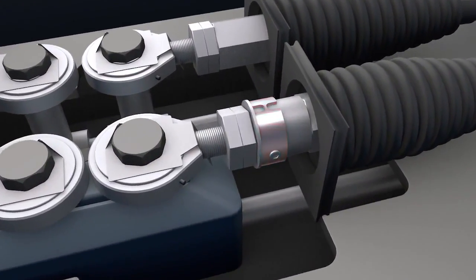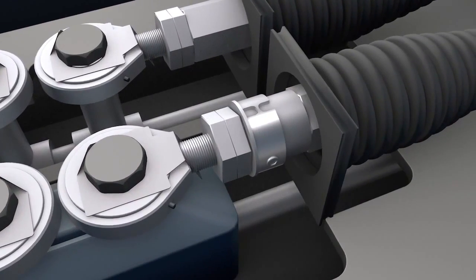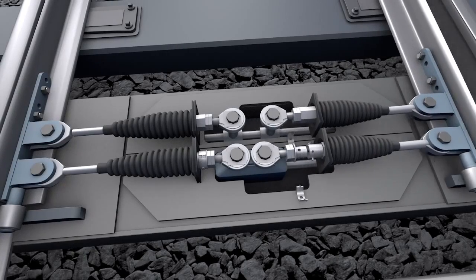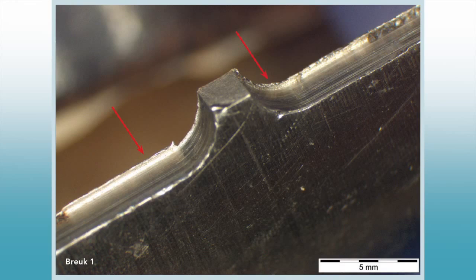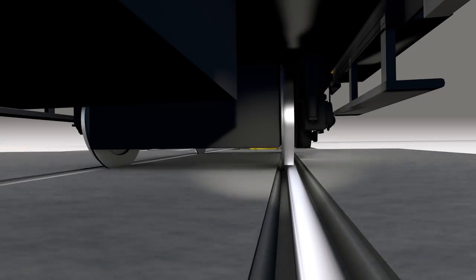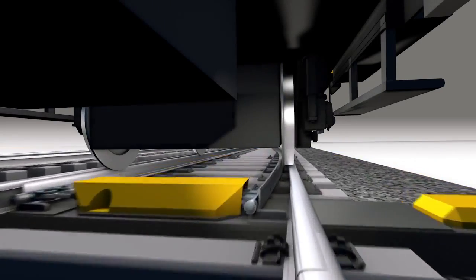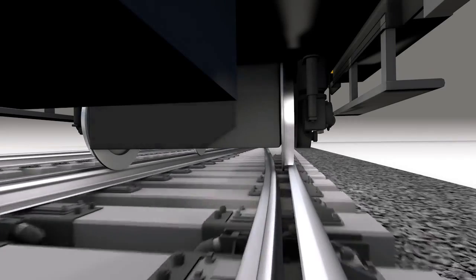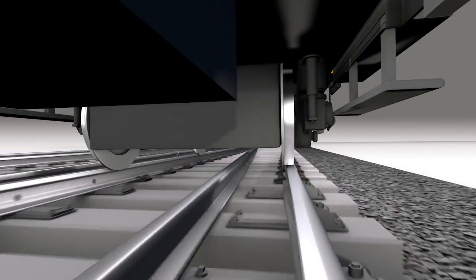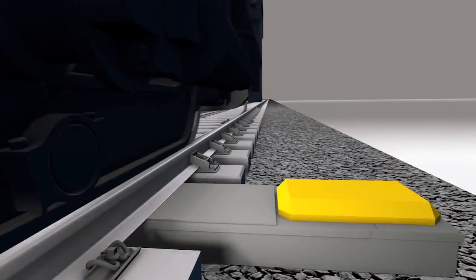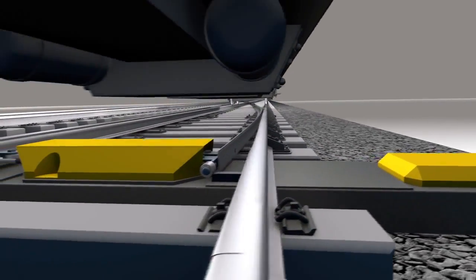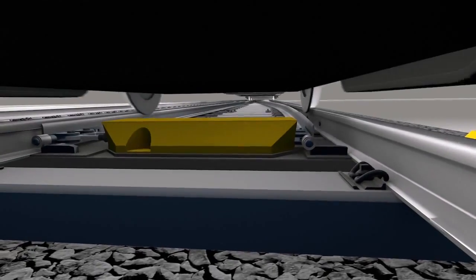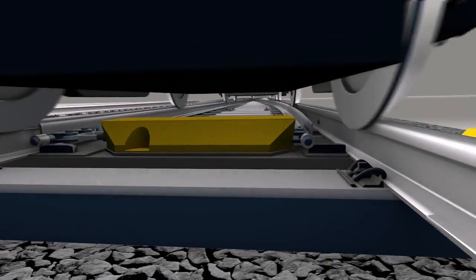Technical investigations revealed that the train derailed because this ring broke suddenly due to fatigue. First of all, the ring revealed finishing defects, making the ring more susceptible to fatigue. Furthermore, the fatigue fracture arose because, over a long period of time, the ring was exposed to additional forces coming from passing trains hitting the switchblades with their wheels. This hitting action caused the switchblade to oscillate, thereby applying additional forces to the point machine and to the ring, for which it was not designed.